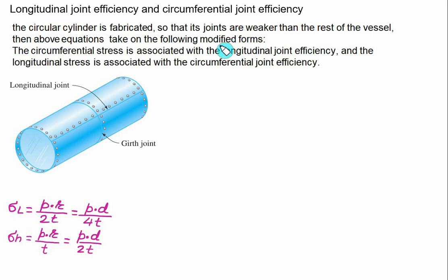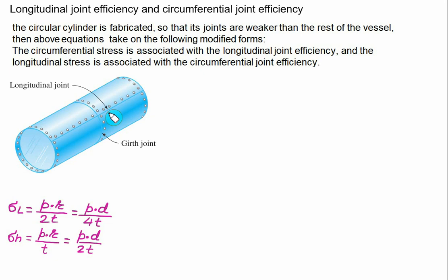Longitudinal joint efficiency refers to the strength of a weld that runs parallel to the axis. The weld or riveting is done along the axis of the pipe or cylinder. It is expressed as a percentage representing the ratio of the strength of the weld to the strength of the base metal.